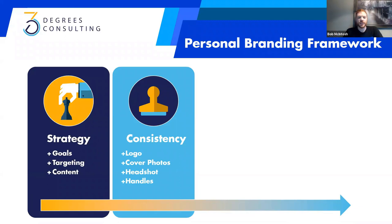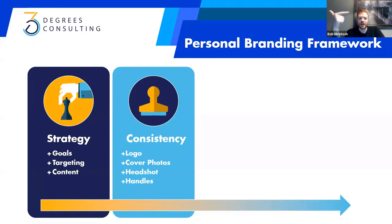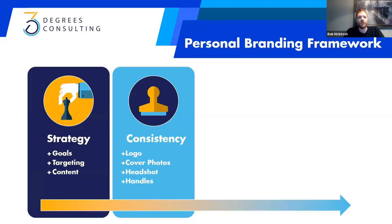The last part of consistency is your handles — your username or where people find you. For example, everything I do for my personal brand can be found at 'The Bob McIntosh.' That means TheBobMcIntosh.com, facebook.com/thebobmcintosh, instagram.com/thebobmcintosh, Twitter @thebobmcintosh, linkedin.com/profile/thebobmcintosh. My handle is always the same across every single platform. Why? Because it makes it that much easier for someone to find me. That consistency is critical.